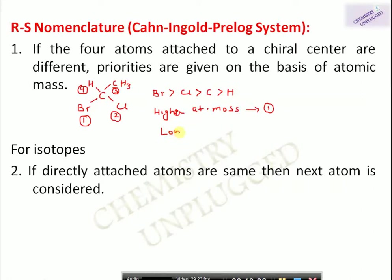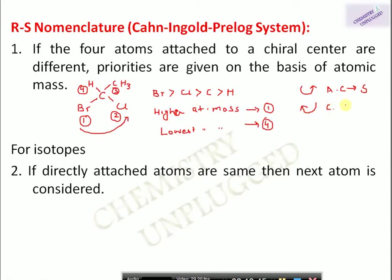After numbering by atomic mass, we rotate the molecule from highest to lowest priority. If the sequence 1→2→3 follows a clockwise direction it gives the R designation; if anticlockwise it gives the S designation. For isotopes — if we have hydrogen and deuterium, we give priority to deuterium since it has higher atomic mass. Similarly, chlorine-37 takes priority over chlorine-35.